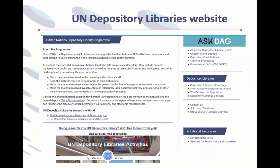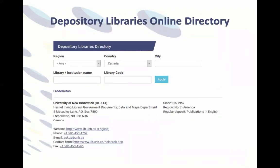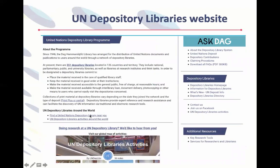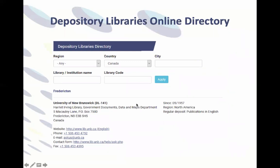The website includes links to sets of frequently asked questions in our AskDag service, a link to a searchable online directory of depository libraries around the world, and a link to the activities map on Findery. The online directory can be searched by several criteria, for instance the depository library code, the name of the library, city and country. This is a screenshot of the directory listing for Canada that is displayed after selecting Canada in the drop-down menu for countries and clicking the Apply button. The listing includes the name of the institution and the library, the address, basic contact information, the date the library was designated as a UN Depository, and the scope of the deposit.